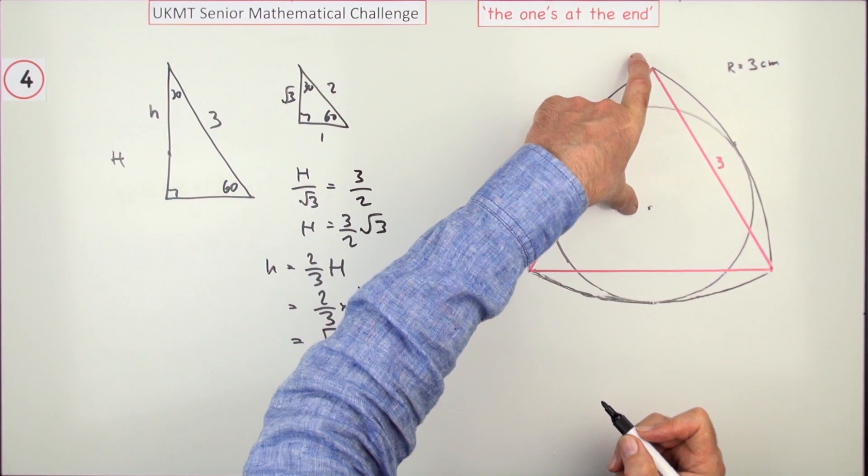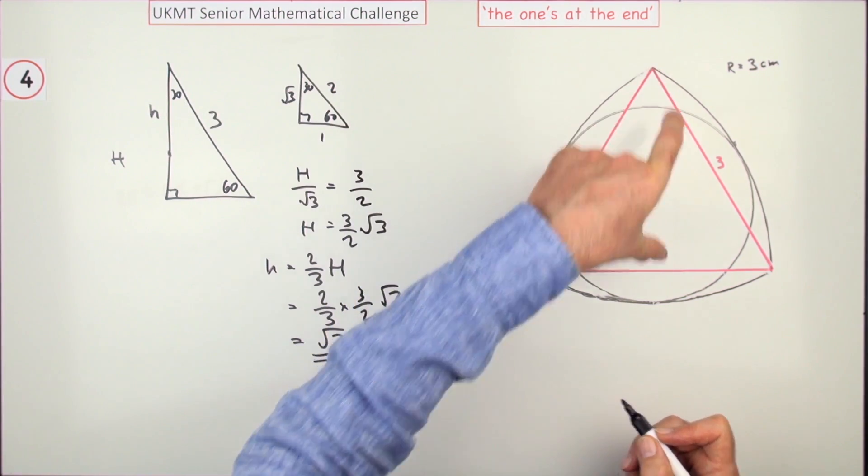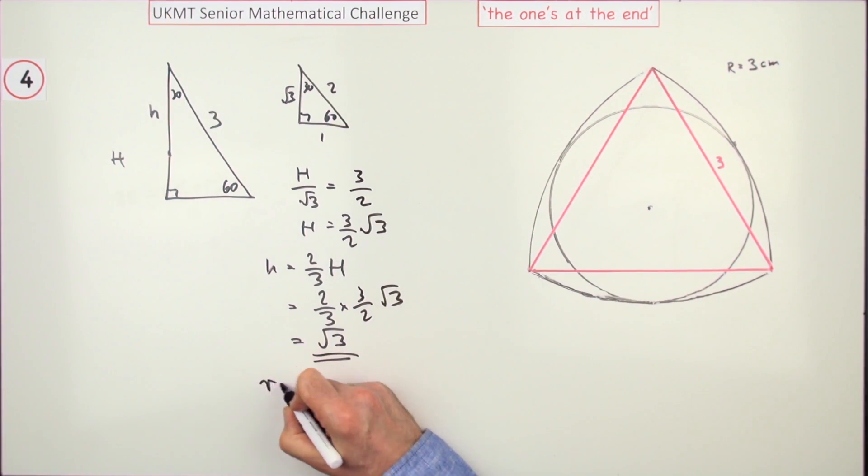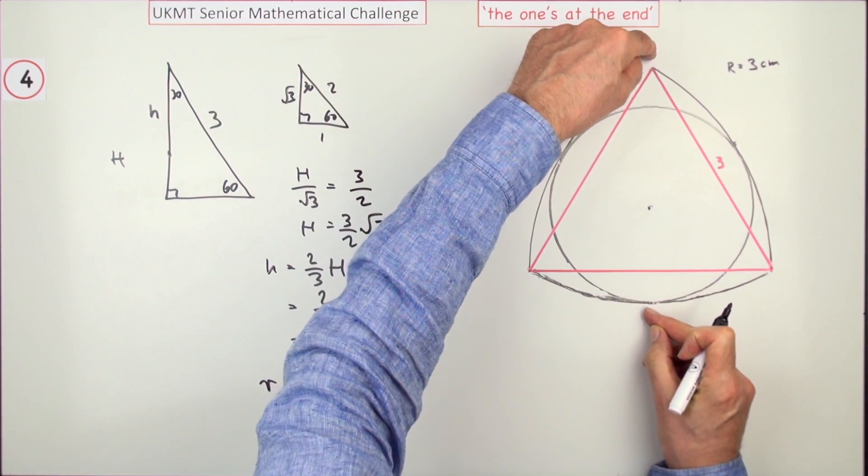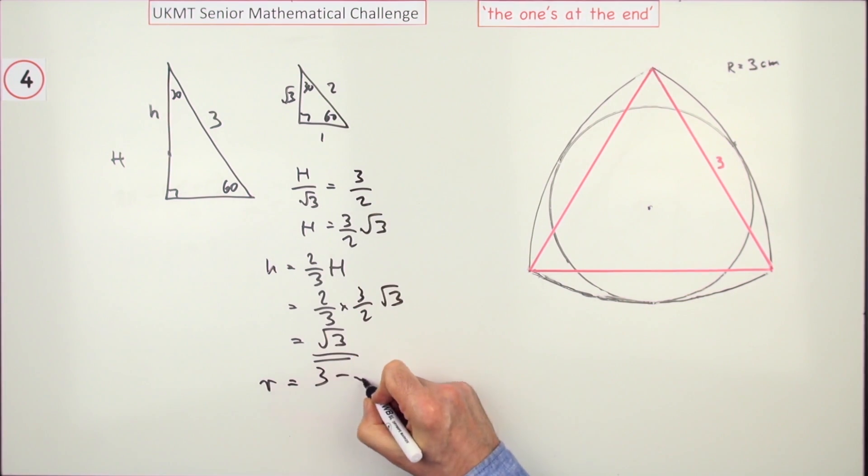So this part here is √3, so the part you want, which is the radius of the circle, will be the whole distance, which is 3, minus √3. That's the first part.